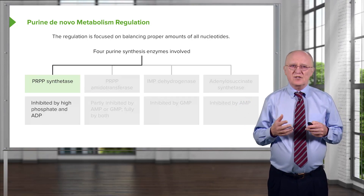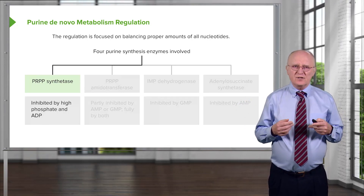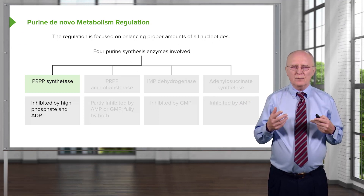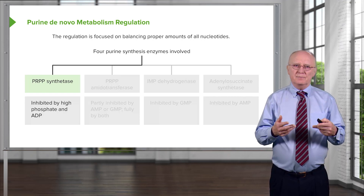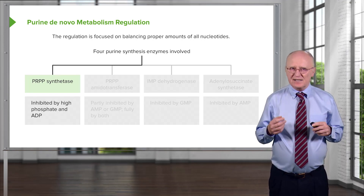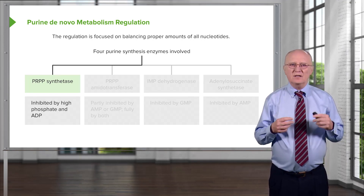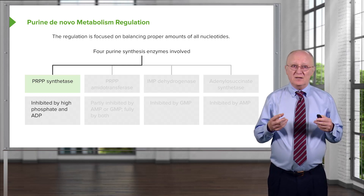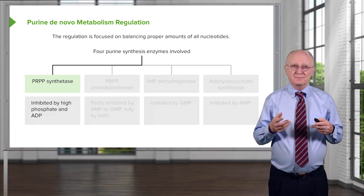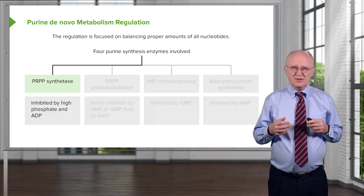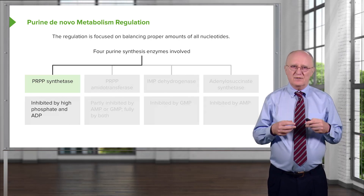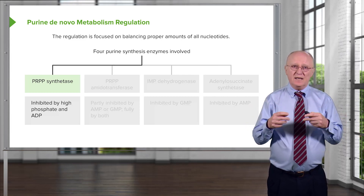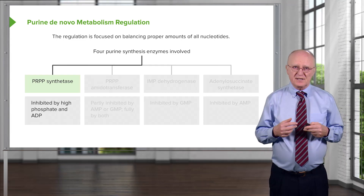This enzyme is actually inhibited by high concentrations of phosphate and ADP. Why is that important? ADP in high concentrations indicates that the cell does not have a lot of energy. Why are cells making nucleotides? They may be making nucleotides to divide, for example. And if a cell doesn't have enough energy, it should not be committing itself to a process of cell division. So having a low energy indicator stop this overall process is important.